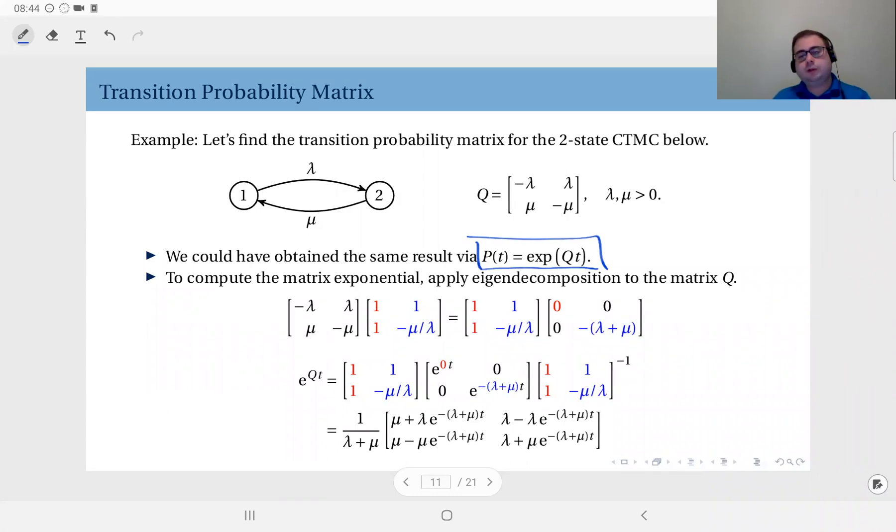And here, you see, this is our matrix q. Here, this one and this one are the matrices that have the eigenvectors of matrix q.